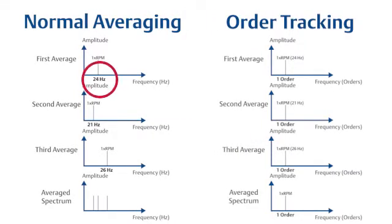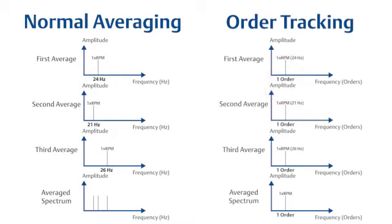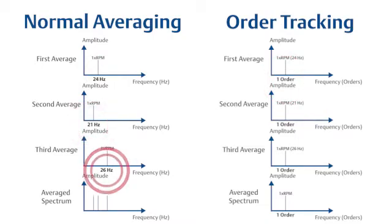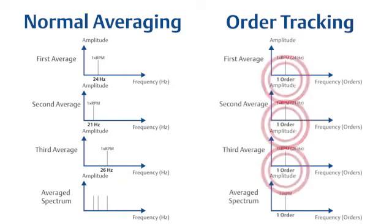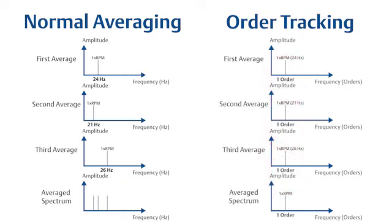The 24 Hz is now expressed as one order, as are the 21 Hz and 26 Hz measurements. Your average is now based on orders, and the spectrum created is meaningful.